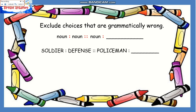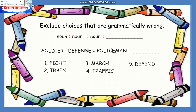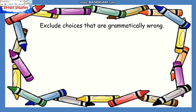Take this example: Soldier is to defense as policeman is to blank. The choices are: 1. Fight, 2. Train, 3. March, 4. Traffic, 5. Defend. Soldier, defense, and policeman are nouns, so we are looking for another noun. Choice one is a verb, number two is a verb, number three is a verb, and number five is a verb. Only number four, traffic, is a noun. So traffic is our answer.